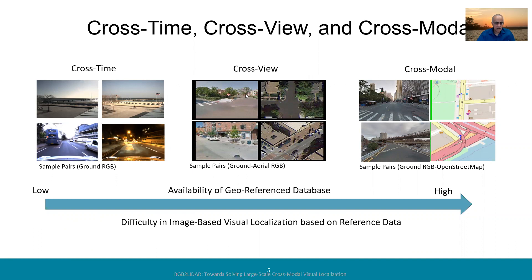The second way is cross-view, where the query imagery is from the ground but the reference is aerial. It's much easier to collect aerial reference data than ground reference data, especially if you want to collect it everywhere. You can get aerial imagery from satellites, aerial platforms, or tools like Google Earth. But then you need to match the ground image to the aerial reference, and that can be quite challenging because the viewpoints have changed quite a bit.